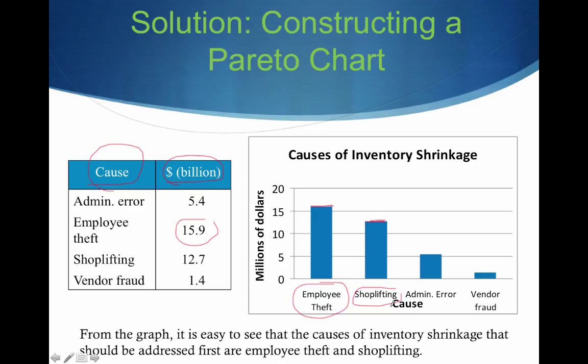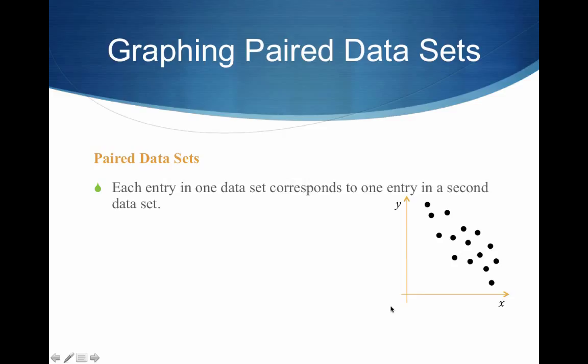Again, why are we doing this, guys? Simply to describe our data. What can we see from this? Well, it's pretty easy to see that the causes of inventory shrinkage that should be addressed first are employee theft and shoplifting. That's the majority of the billions.